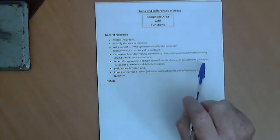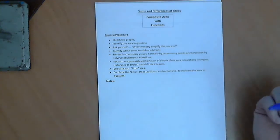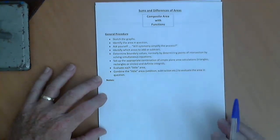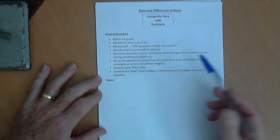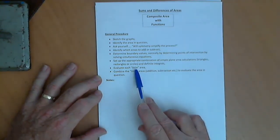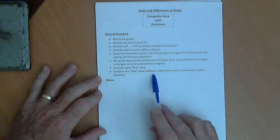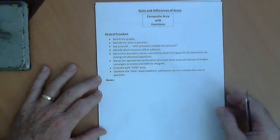Sometimes you can use simple shapes, triangles, rectangles, circles which don't need calculus, maybe trapezium. Otherwise, you need to use your definite integrals. Evaluate each little area or each component and then add or subtract them to work out the area in question.